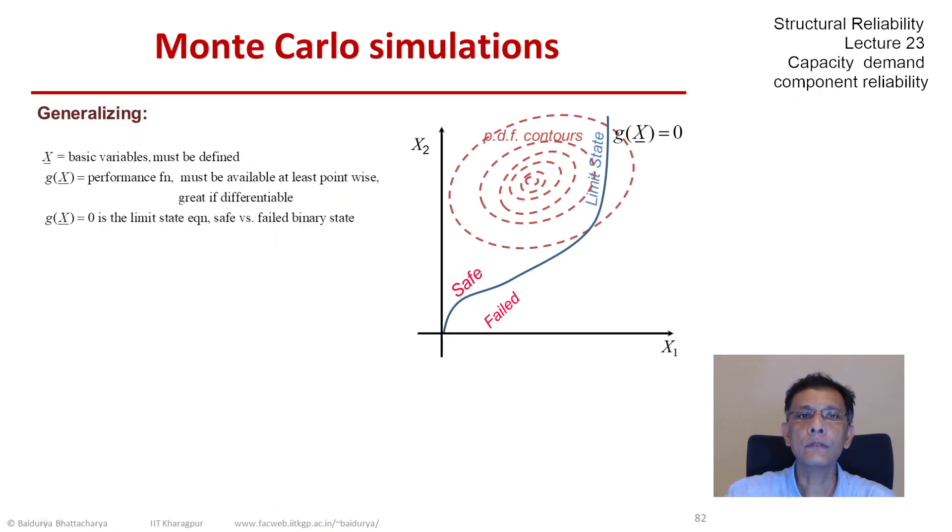So if we generalize this in the context of the random variables x, what we have is a set of basic variables which define the problem, a performance function, and this part of the course we are now talking only about a single performance function. We are talking about element or component level reliability.